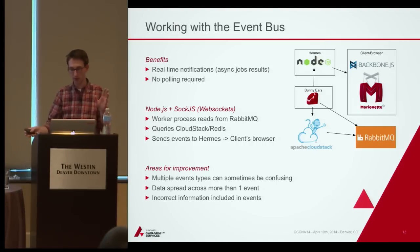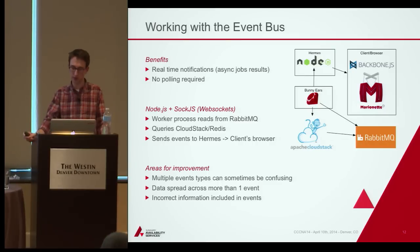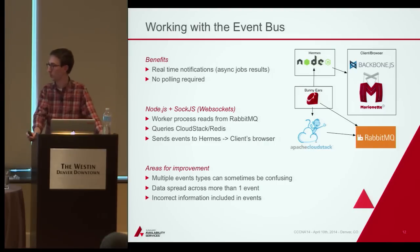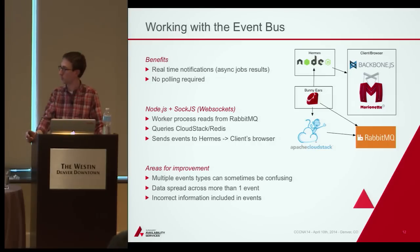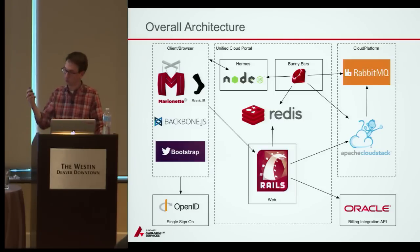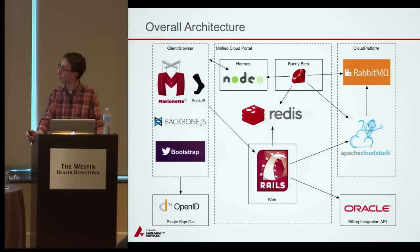Some events contained internal database IDs for projects that you couldn't use to look things up. In one specific case for async jobs, we committed back a fix that added the project ID to async job events for projects, making it easier to look up which project an event was relevant for. That circles back to the full architecture — no surprises, just wanted to put it back up so you could see the whole picture.